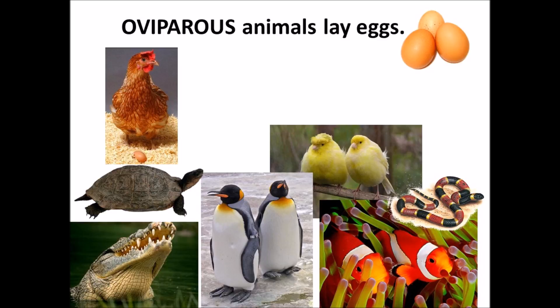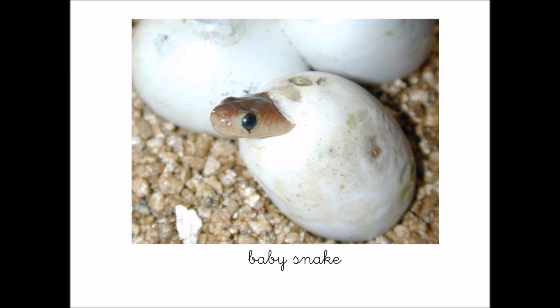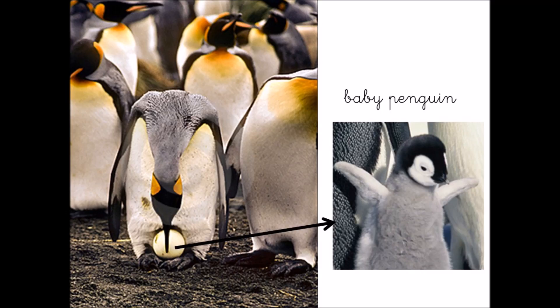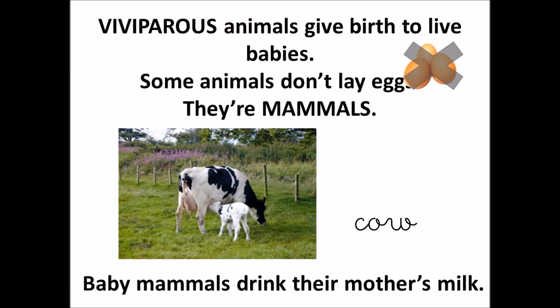Oviparous animals lay eggs. Baby chick. Baby turtle. Baby snake. Baby penguin. Baby fish. Viviparous animals give birth to live babies.